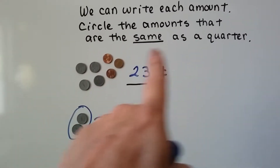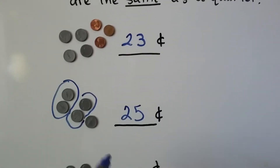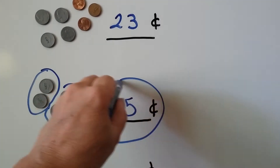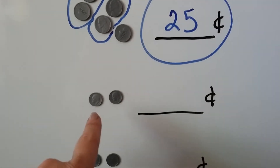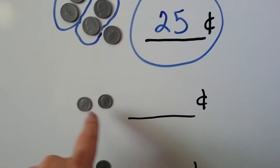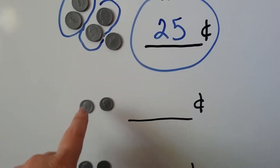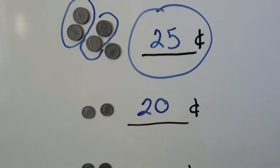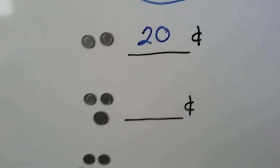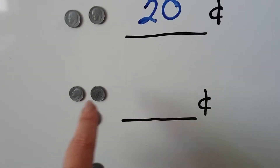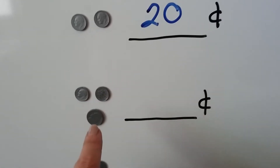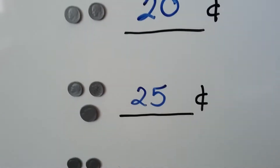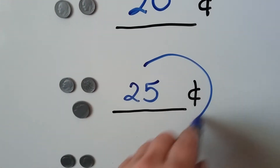Now it says to circle the amounts that are the same as a quarter. And 23 cents isn't the same as a quarter, but 25 cents is, right? So we're going to circle that. Here we have two dimes — that's 10 cents and 10 cents, so 10 plus 10 is 20. That's 20 cents, but that's not equal to a quarter. What about now? We have a dime and a dime and a nickel — now we have 20 plus a 5, that's 25. That's equal to a quarter, so we're going to circle that one too.